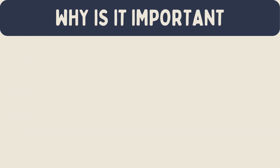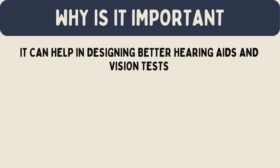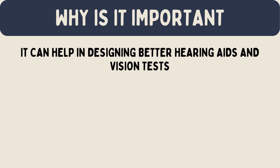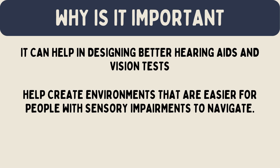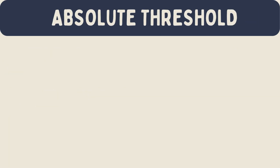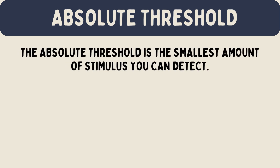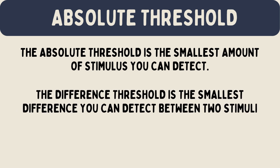Why is absolute threshold important? Understanding absolute thresholds helps scientists and doctors in many ways. It can help in designing better hearing aids and vision tests, and it can also help create environments that are easier for people with sensory impairments to navigate. It's important to know that the absolute threshold is not the same as the difference threshold — the absolute threshold is the smallest amount of stimulus you can detect, while the difference threshold is the smallest difference you can detect between two stimuli, for example, the difference between two different shades of the same color.